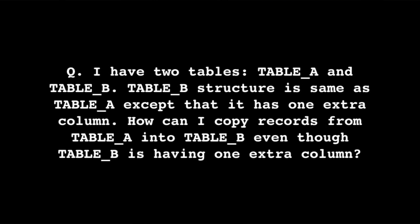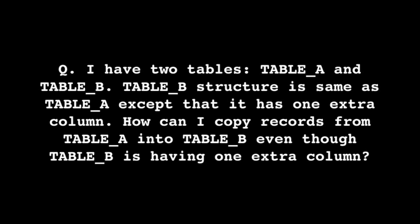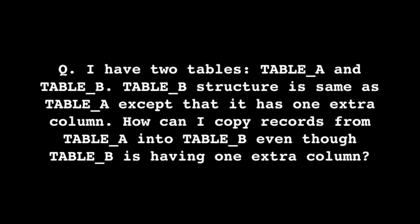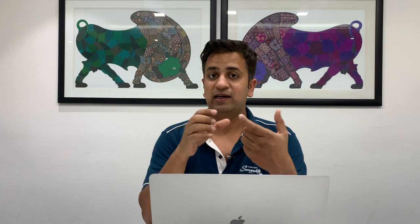Second question: I have two tables — Table A and Table B. Table B has the same structure as Table A except it has one extra column. How can I copy records from Table A into Table B? When you run INSERT INTO Table B SELECT * FROM Table A, if Table B has five columns while Table A has four, that statement will fail.